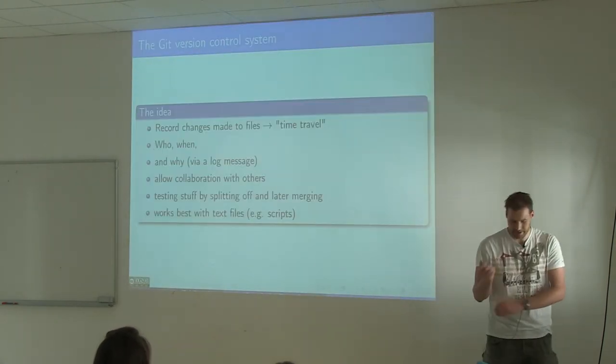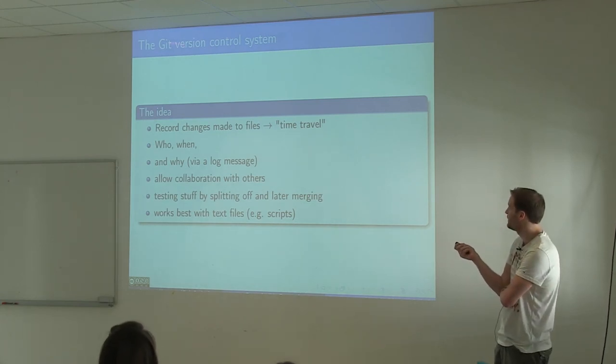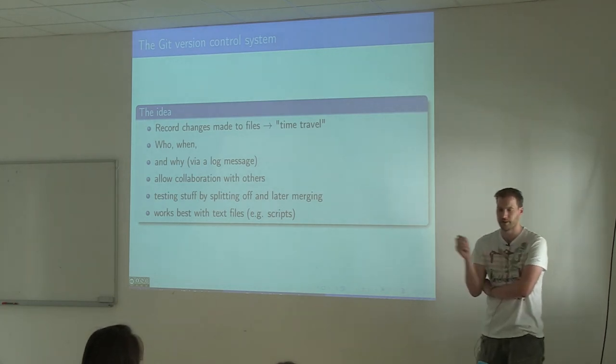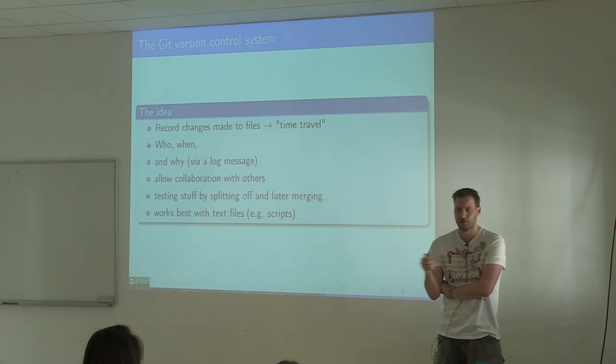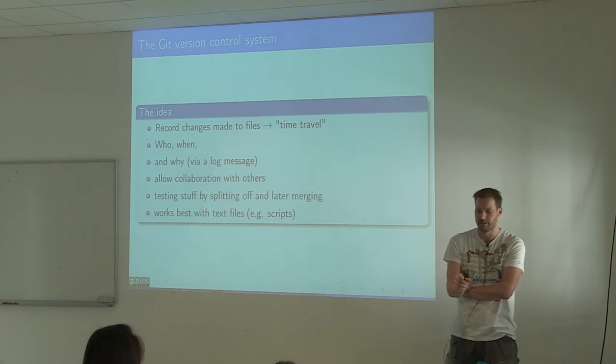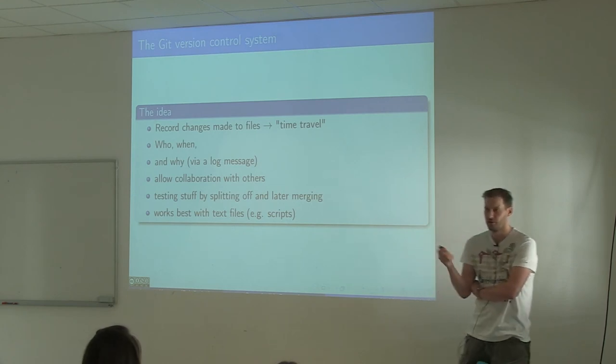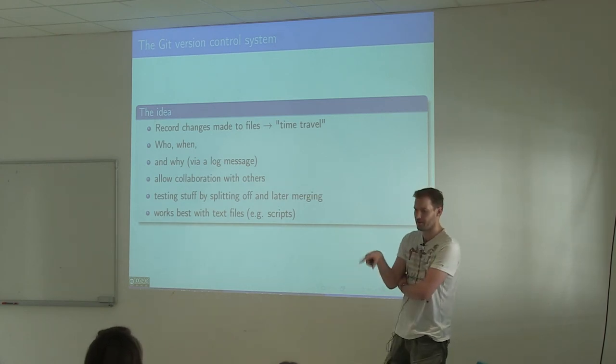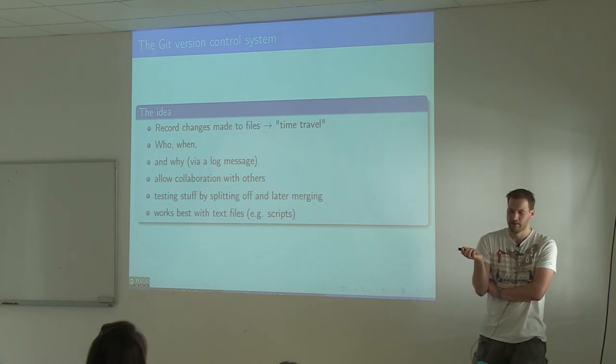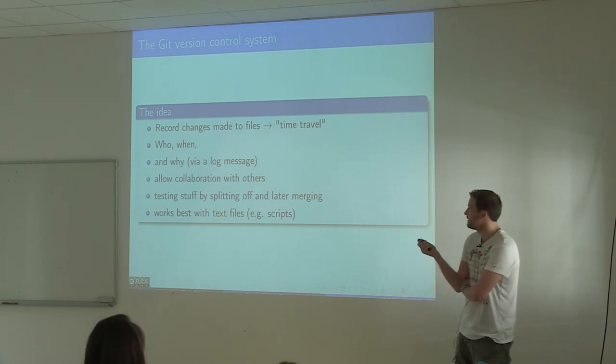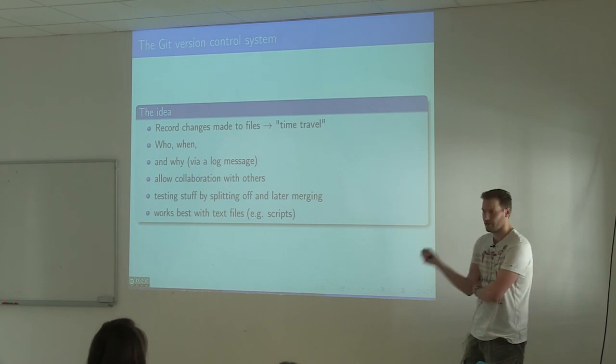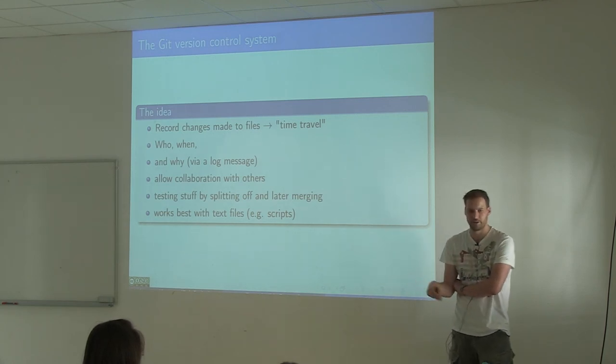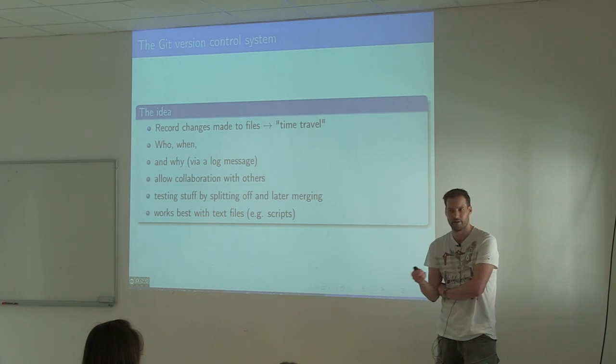The next step that I want to practice is this git version control system. The idea behind the version control system is that you record all the changes that you make at a certain time. The system writes who did something and when, at what time, and then you have to explain in a message why you made this change. This way you can always go back, sort of time travel. The nice thing about git is that it actually allows even collaboration with others. You can work with 10 people on the same file, and when you come in in the morning you can see what the guys did yesterday on the script and why, is it working differently or not.